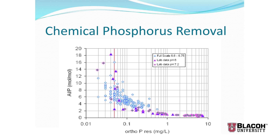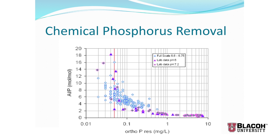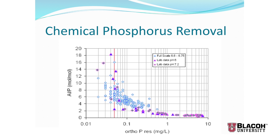This is the most important thing to understand about chemical phosphorus removal. This graph shows the amount of chemical that has to be added to achieve a certain level of phosphorus remaining in the water. On the vertical axis is a measurement of the amount of aluminum compared to the amount of phosphorus in the wastewater — expressed in moles to make it equal in chemical terms. If we had eight milligrams per liter of phosphorus and added eight milligrams per liter of aluminum, that would be a one-to-one molar ratio. Adding one mole of aluminum to one mole of phosphorus, you can get down to about one milligram per liter of phosphorus.